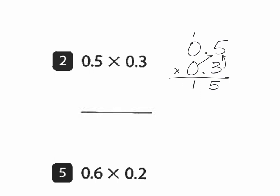The last thing I do need to do, though, is count up the number of digits behind the decimal point. So there's one here, and there's one here. So I need to make sure there are two digits behind my decimal point in my answer. So for this problem, I'm going to need to move it, or I need to have two digits behind the decimal. So my answer here is 15 hundredths.